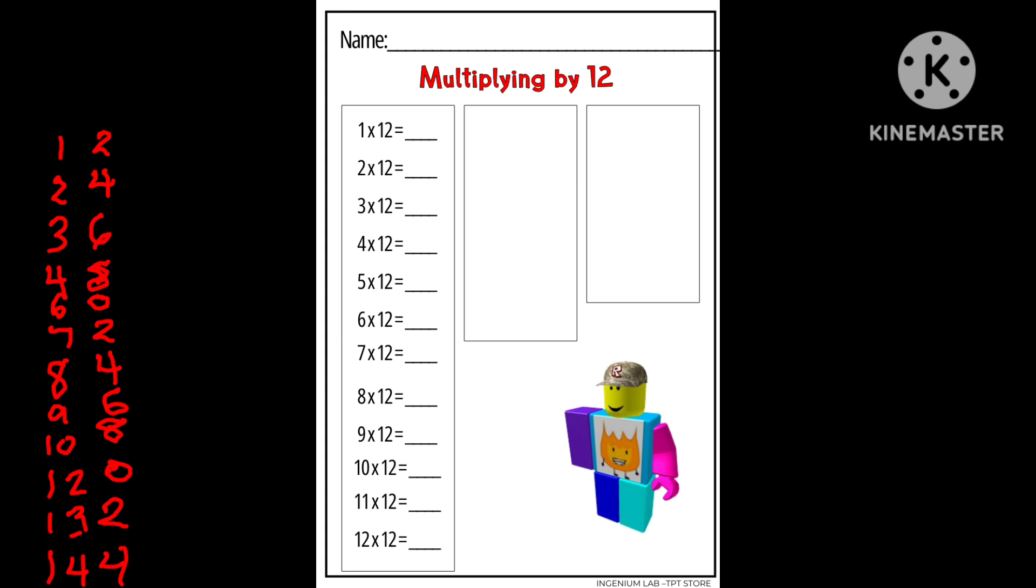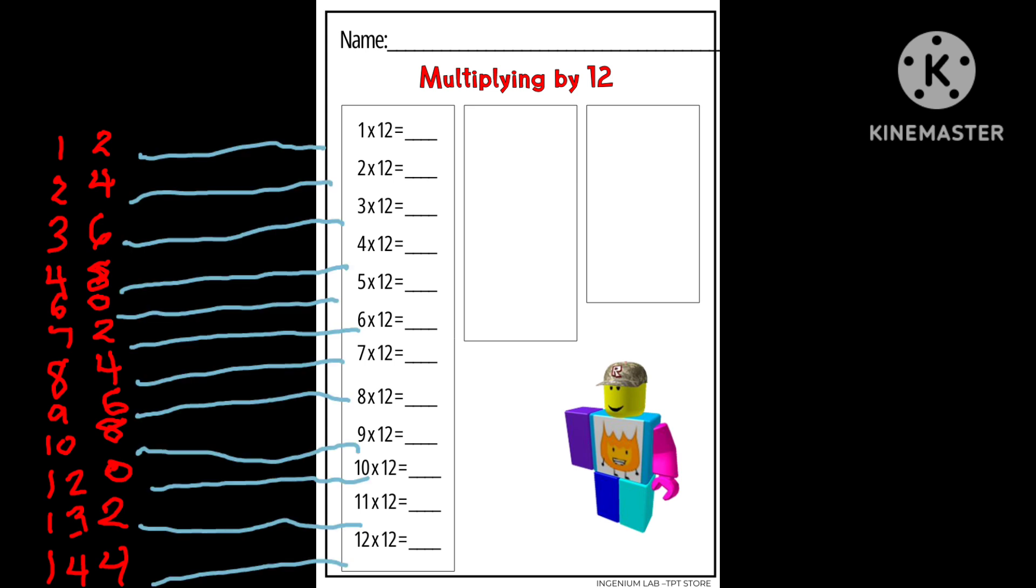These are the multiples of 12 in order and there you have it friends. You've got all the multiples of 12. You've got a strategy you can use to figure it out plus you have a hack you can use to help you remember the multiples of 12. You can use either one you'd like. Either way, you've got this. I believe in you.